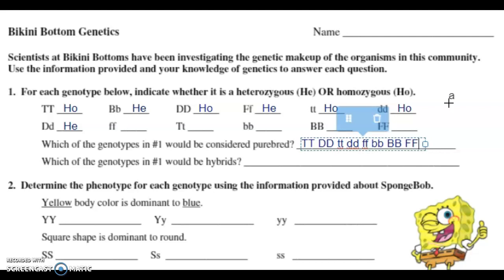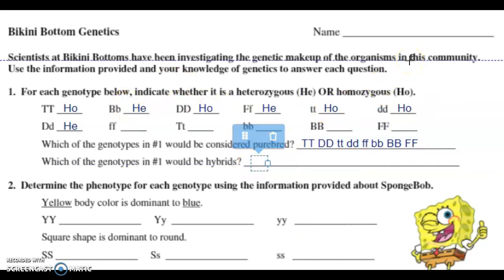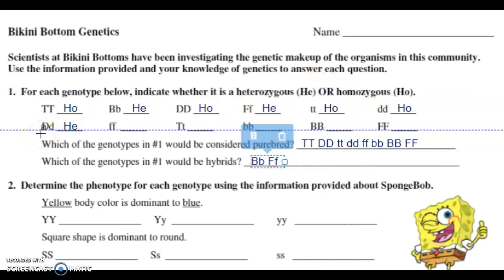Then it says which of the genotypes in number one would be hybrids? Hybrids are heterozygous — a hybrid is a mix between two different alleles. So for the hybrids, big B little B would be hybrid, big F little F would be hybrid, big D little D would be hybrid, and big T little T would be hybrid.